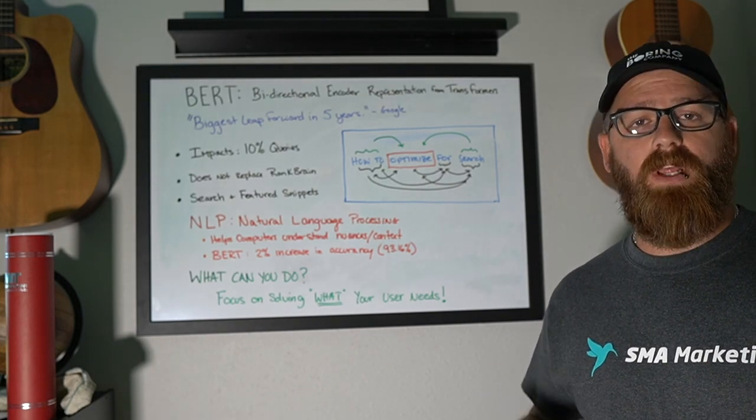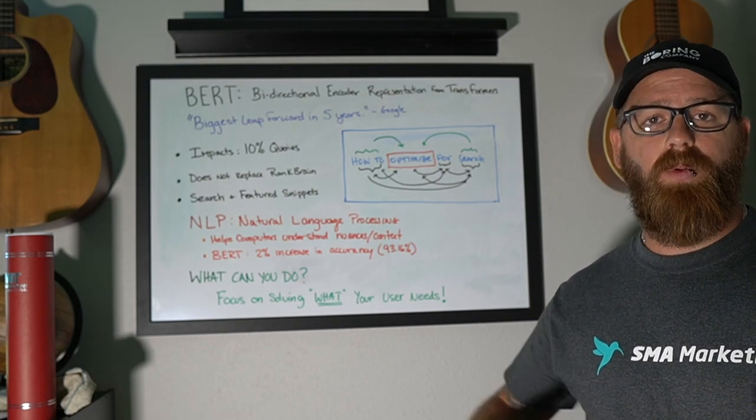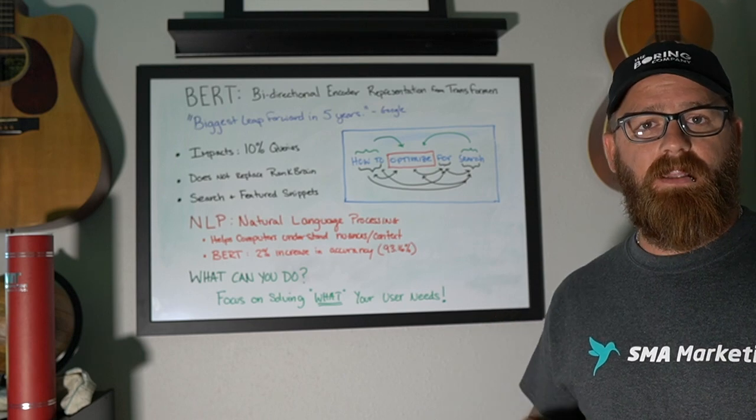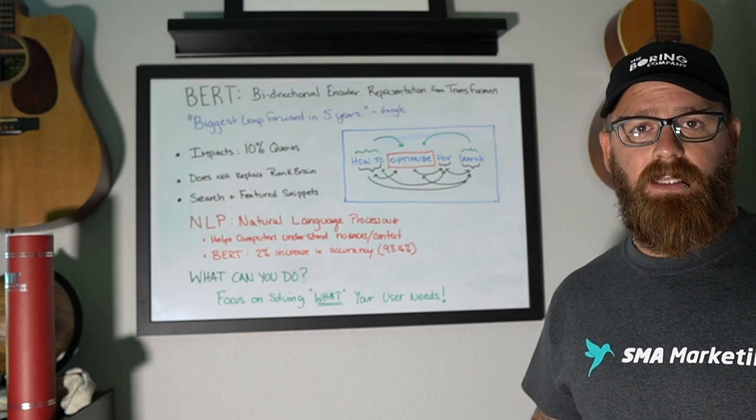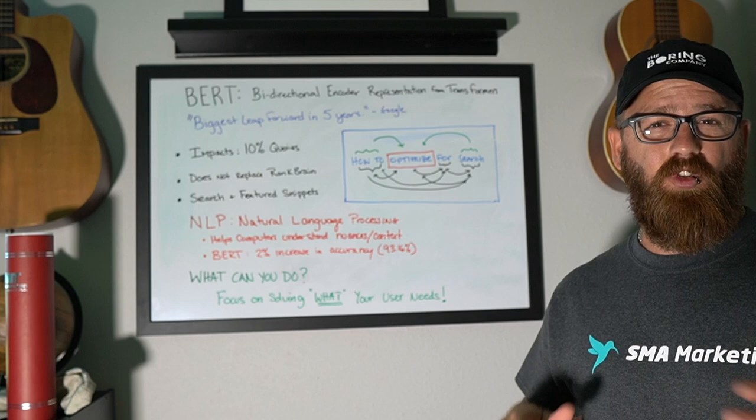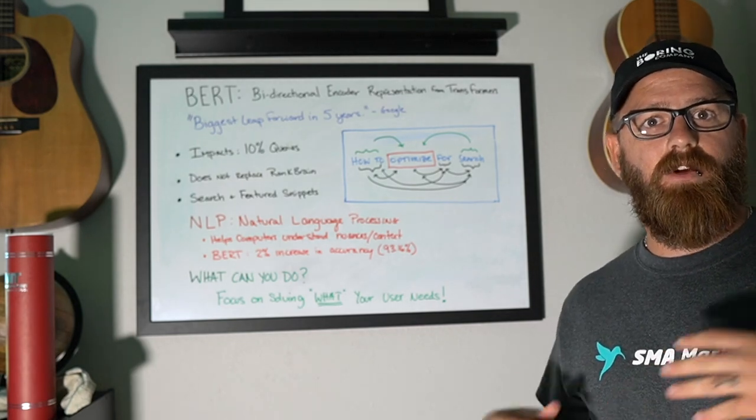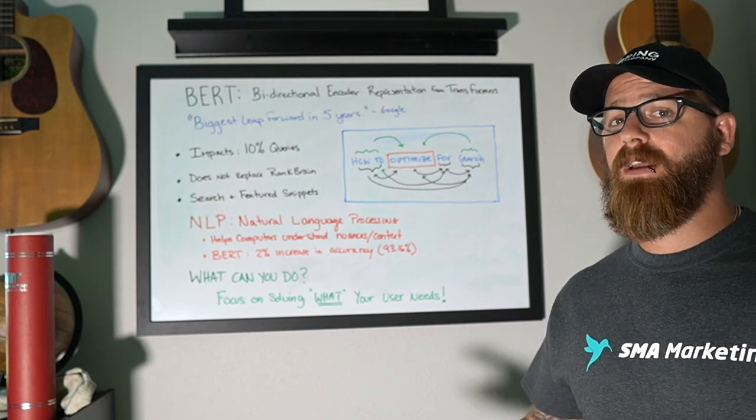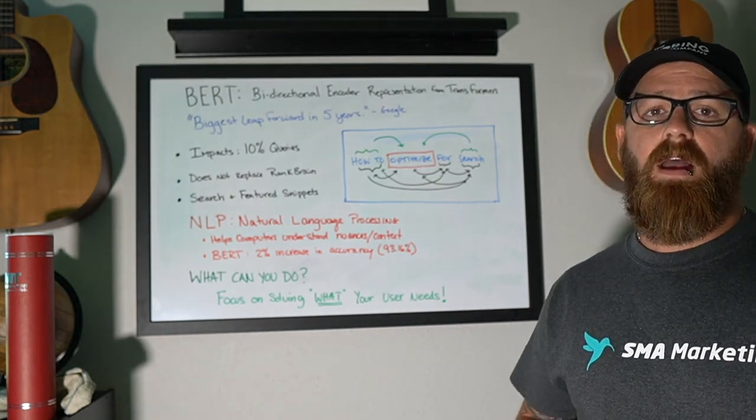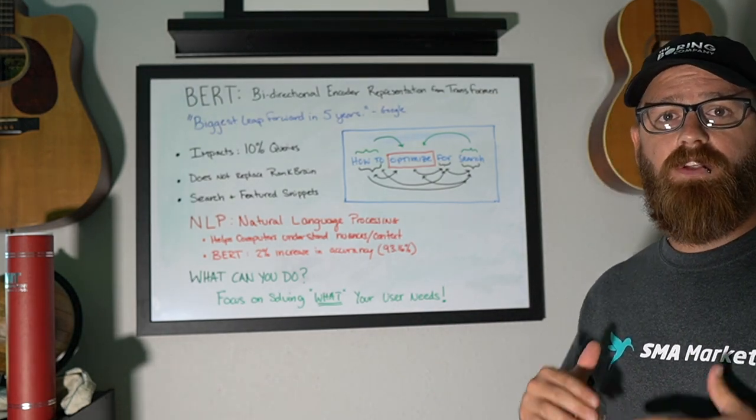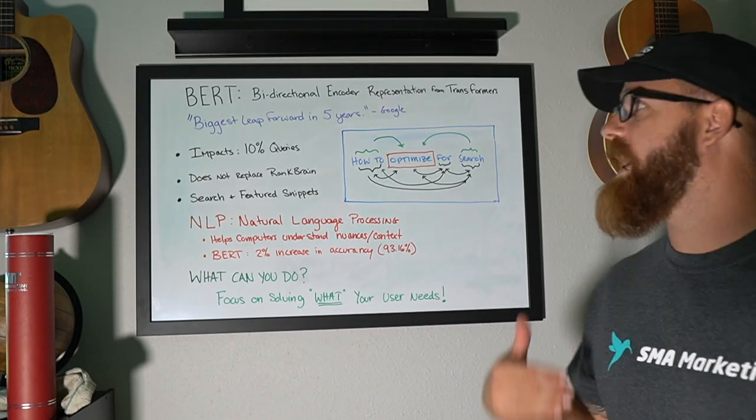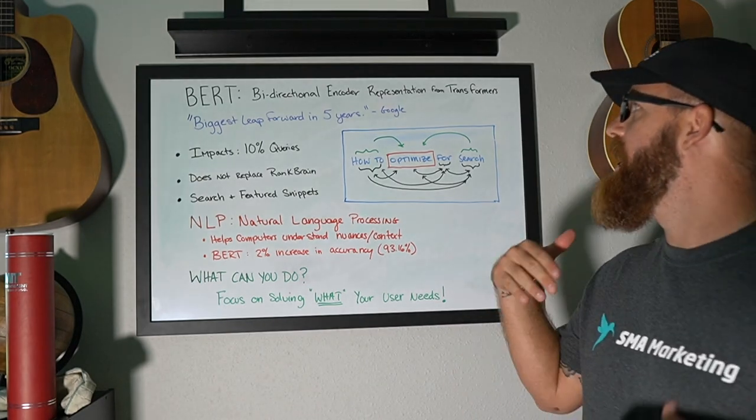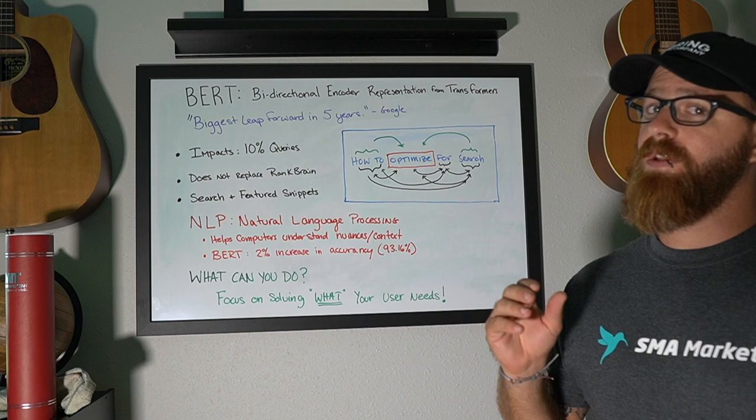Like I said in the intro, this video is going to be about BERT and it's Google's new AI enabled ranking algorithm. This is something that was released in October of 2019. This is something that Google has been working on for quite some time. About a year ago, they talked about this open source project known as BERT and it stands for bi-directional encoder representation for transformers.